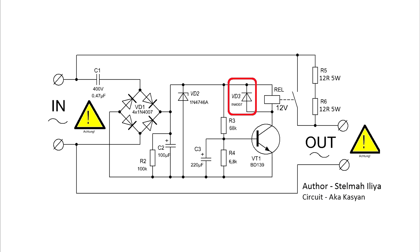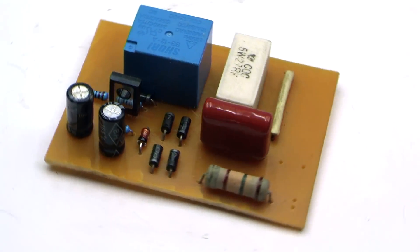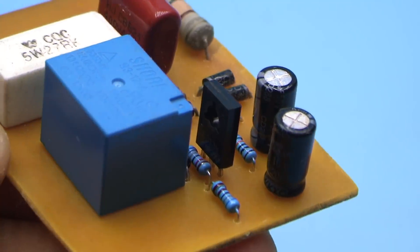A diode connected in parallel to the relay winding is for transistor protection, since when the relay is opened, the self-induction voltage from the coil can damage the transistor.